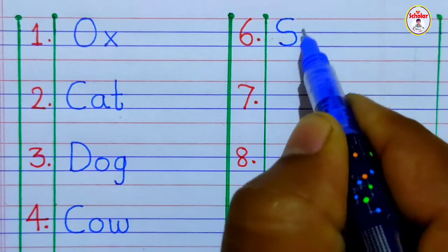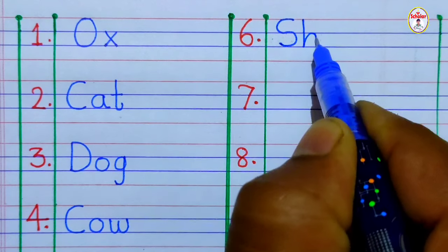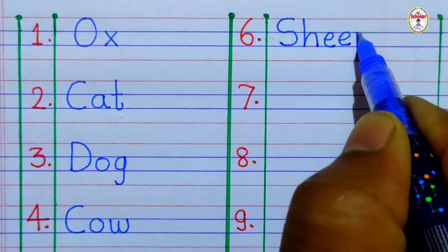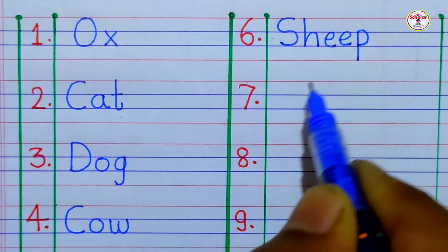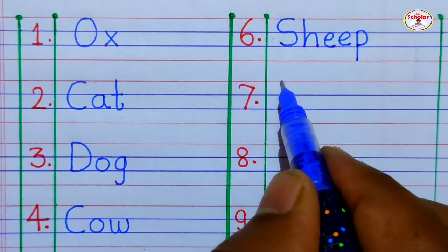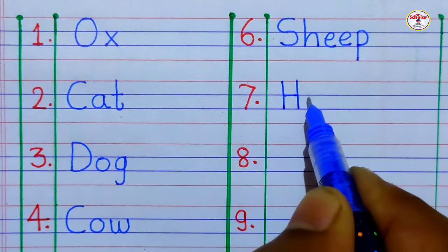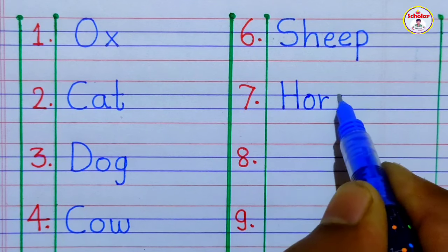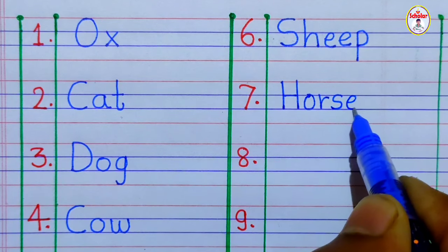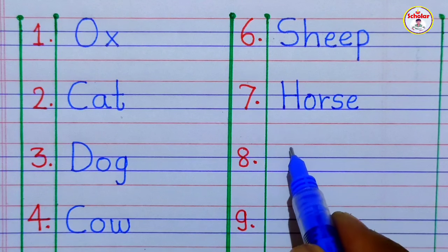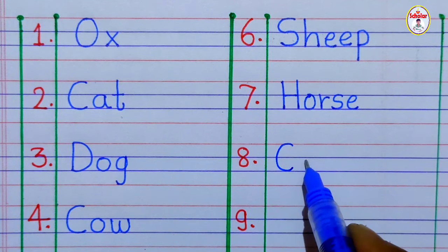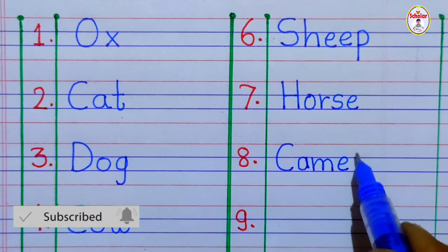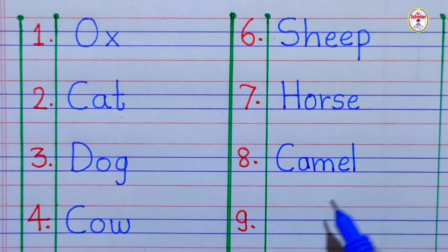s, h, double e, p — sheep. h, o, r, s, e — horse. c, a, m, e, l — camel.